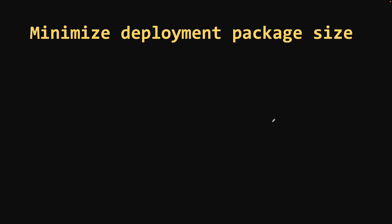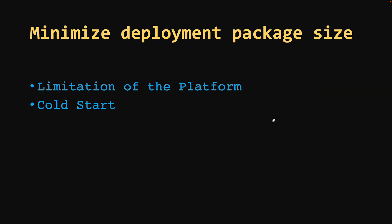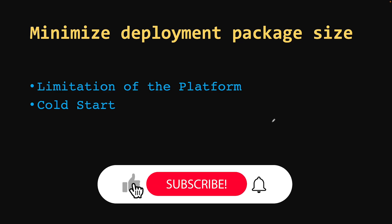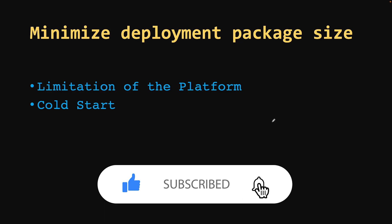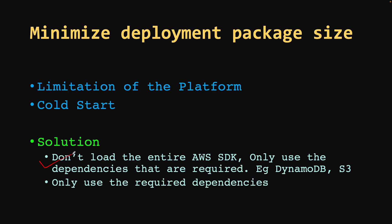The last best practice is to minimize your deployment package size. Lambda deployment size matters for two reasons: first, the platform limits you to 50 MB artifact size; second, a smaller package means less time for the Lambda environment to unpack your artifact, resulting in less initialization time and fewer cold start issues. When using the AWS SDK, don't include the entire SDK — use service-specific dependencies. For example, if your Lambda interacts with DynamoDB, include only the DynamoDB dependency; if it's S3, include only the S3 one.